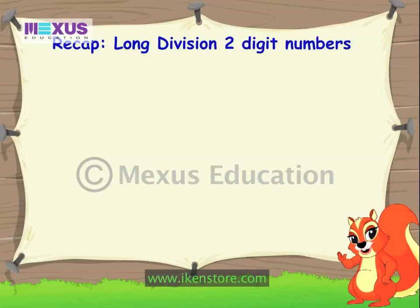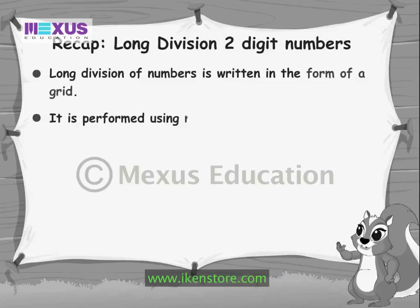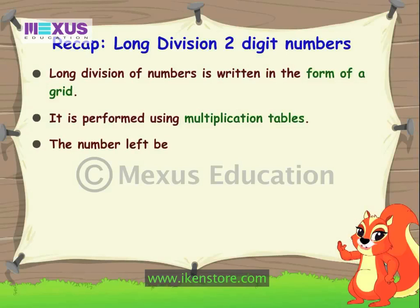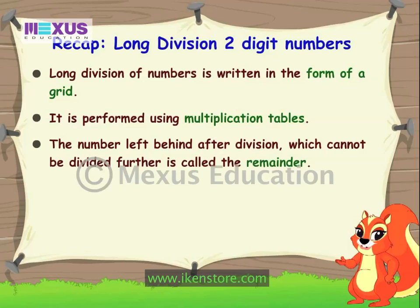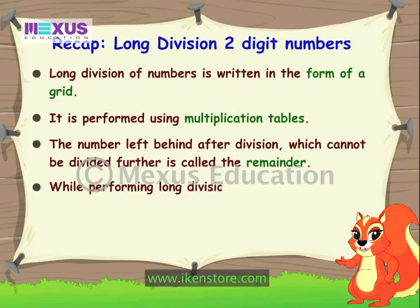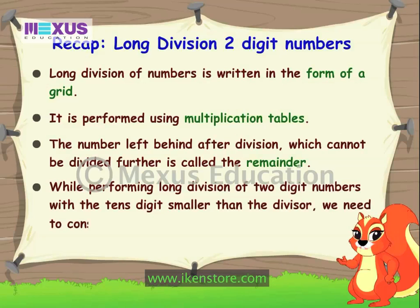Here's a quick recap. Long division of numbers is written in the form of a grid. It is performed using multiplication tables. The number left behind after division, which cannot be divided further, is called the remainder. While performing long division of two-digit numbers with the tens digit smaller than the divisor, we need to consider both the digits for division.